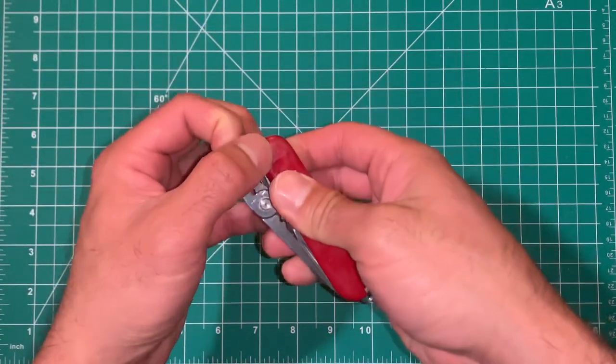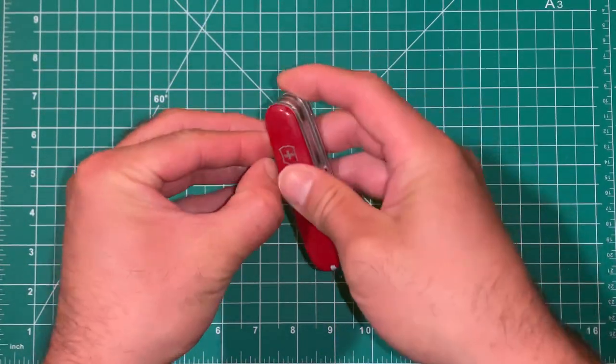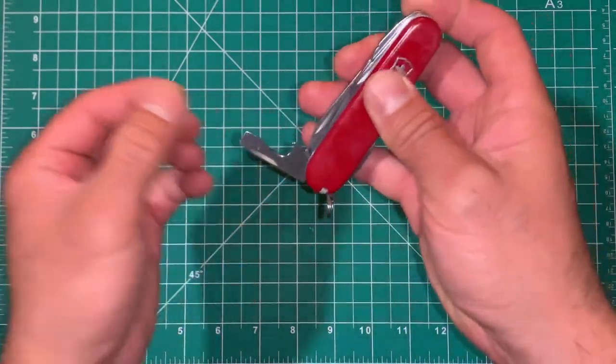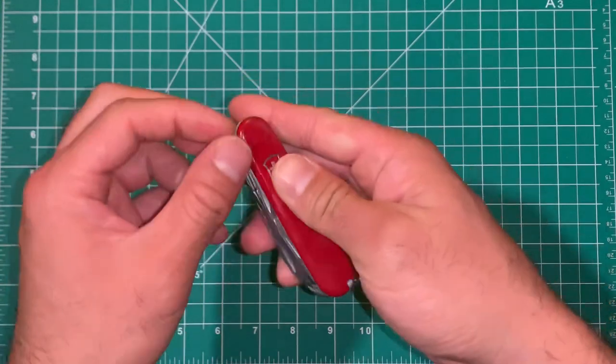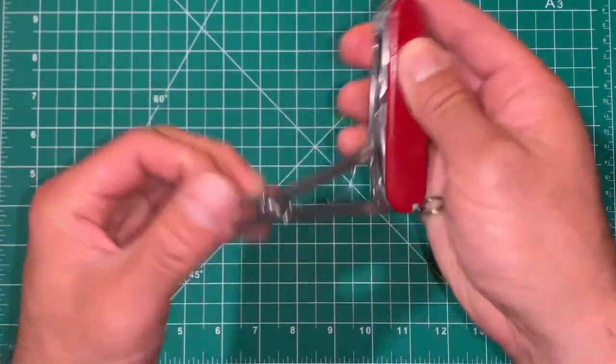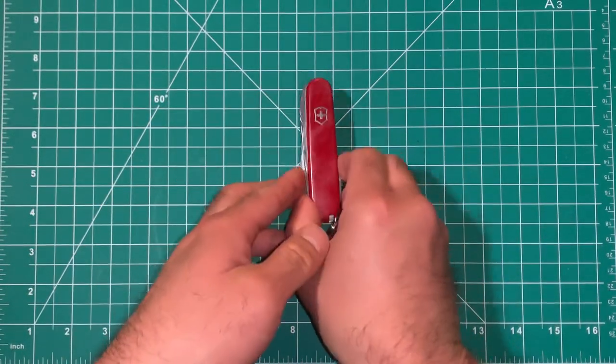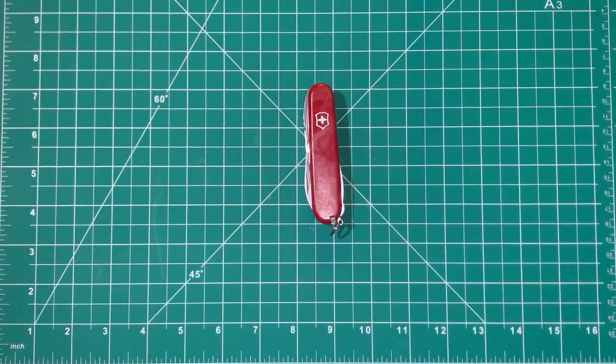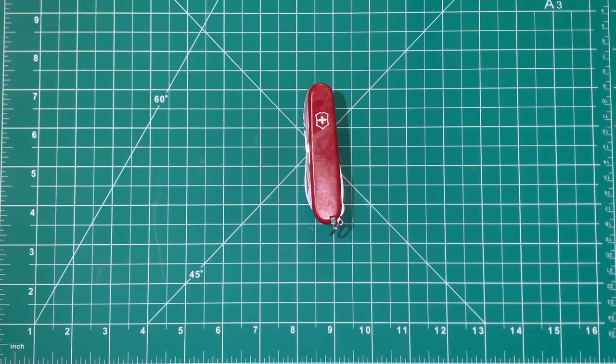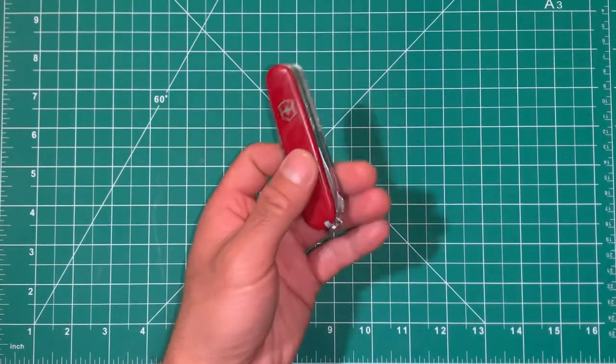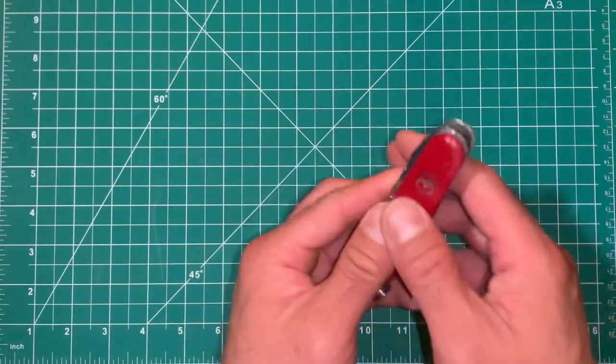You then also have a pair of small pliers, so really good tool set. And I think at $50, a pretty good one-tool option. A little thick, a little heavier.